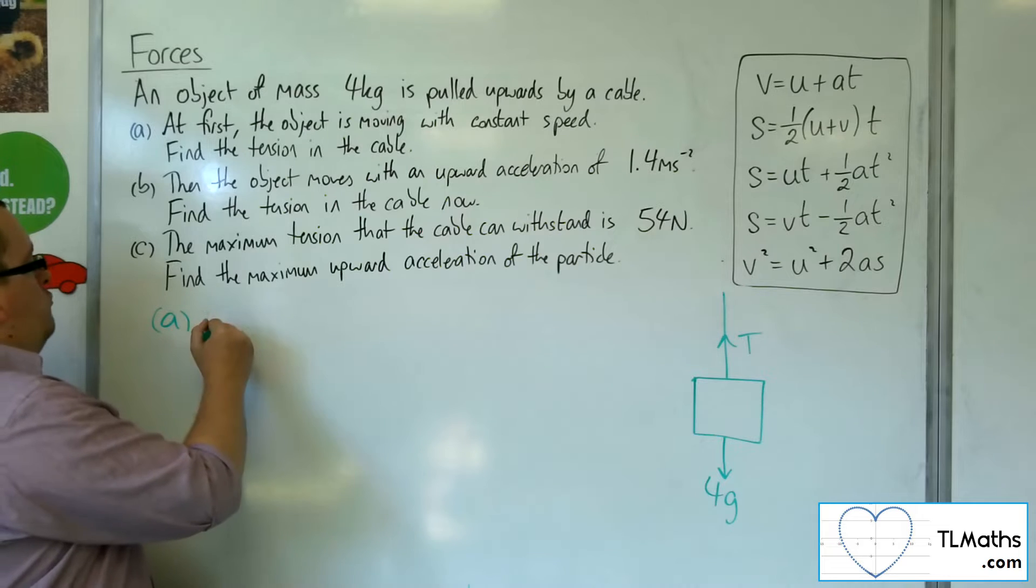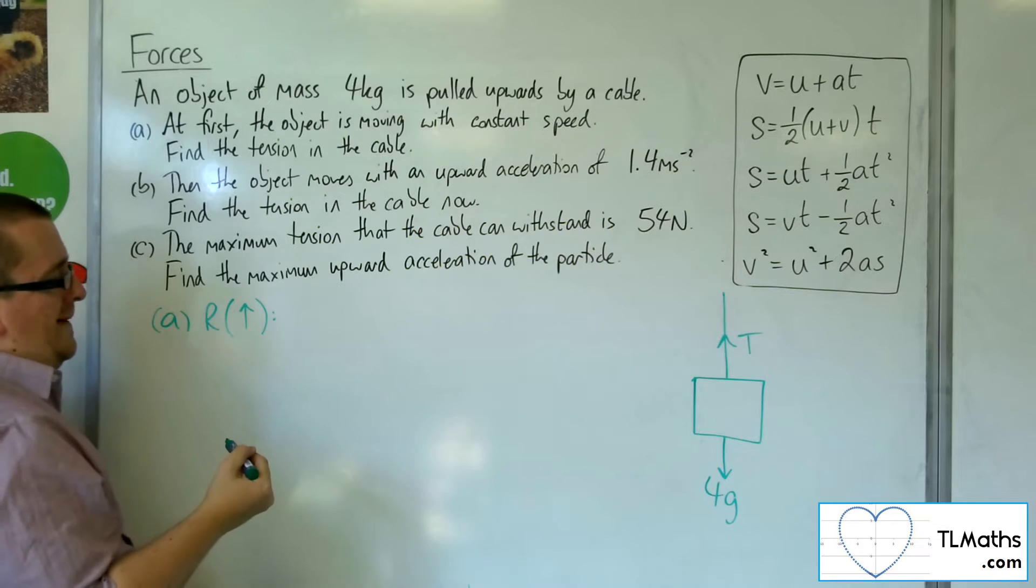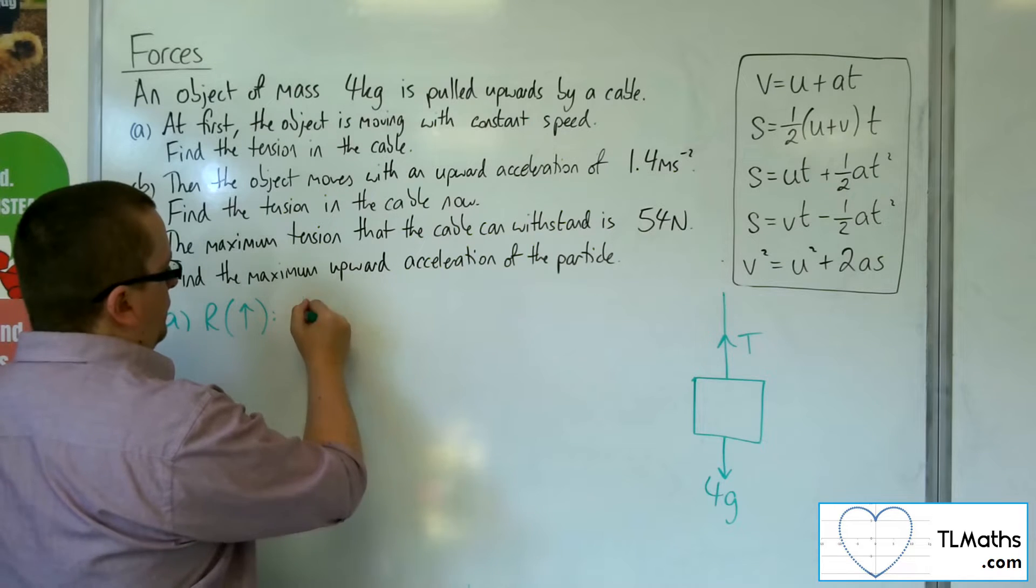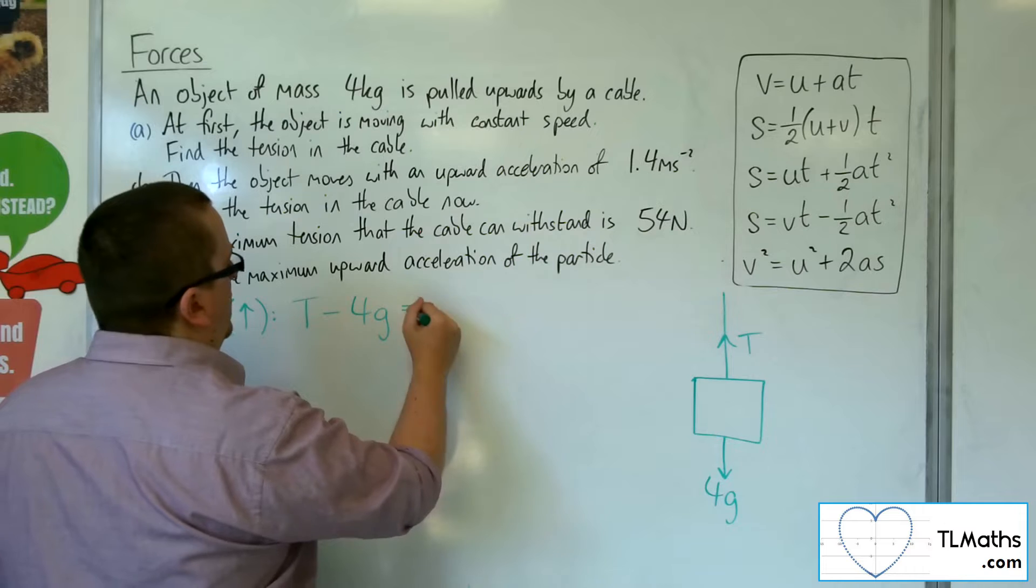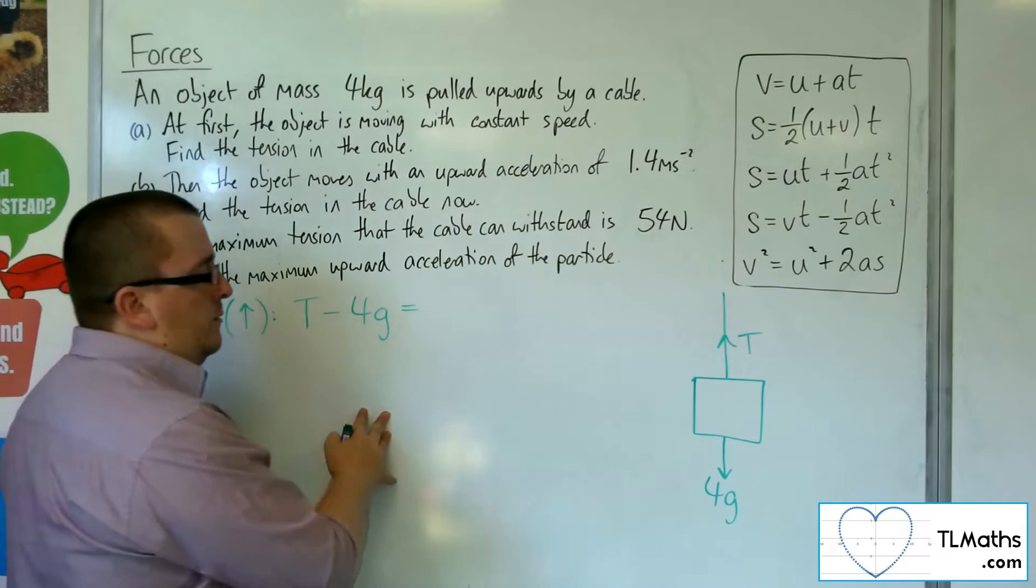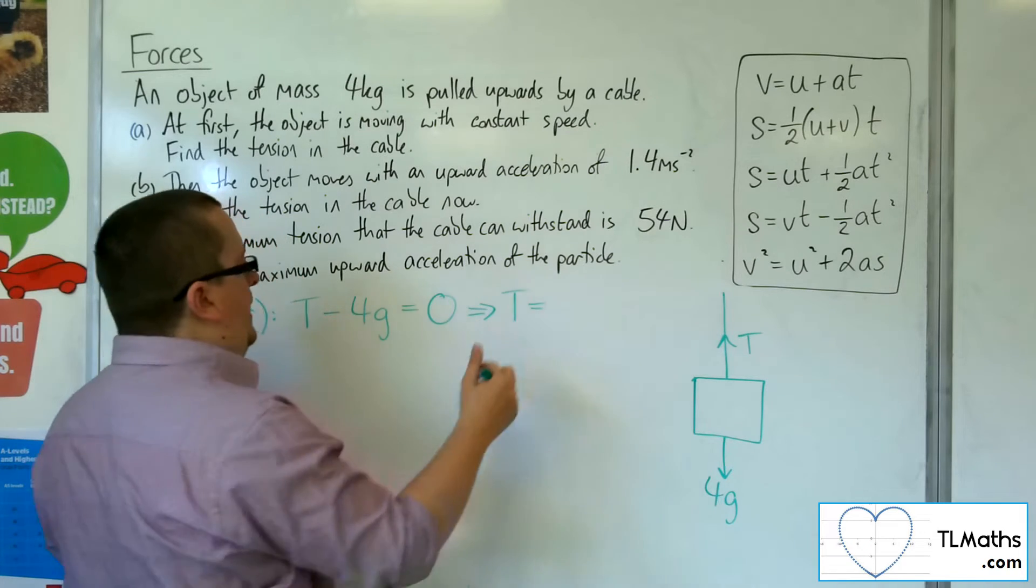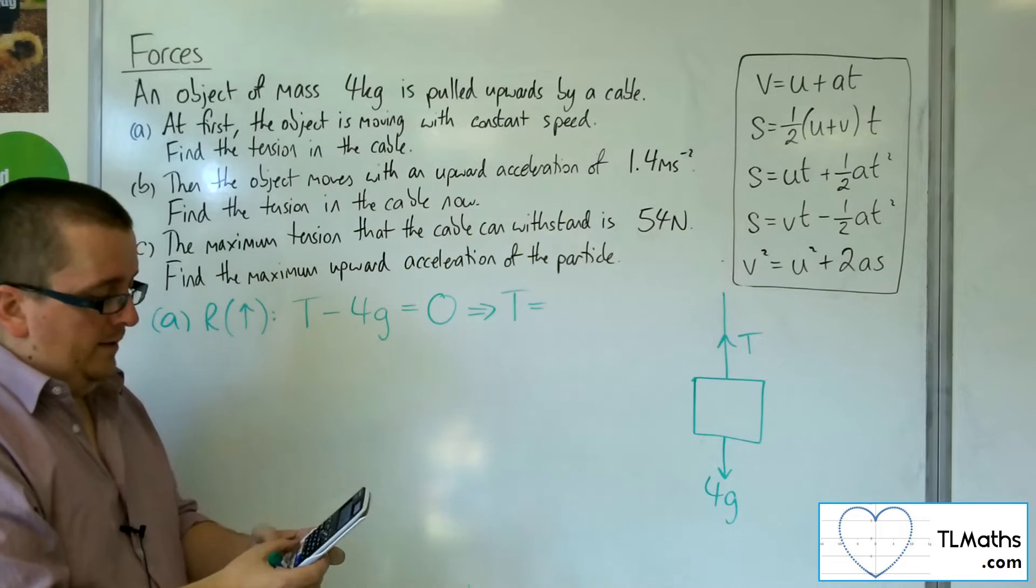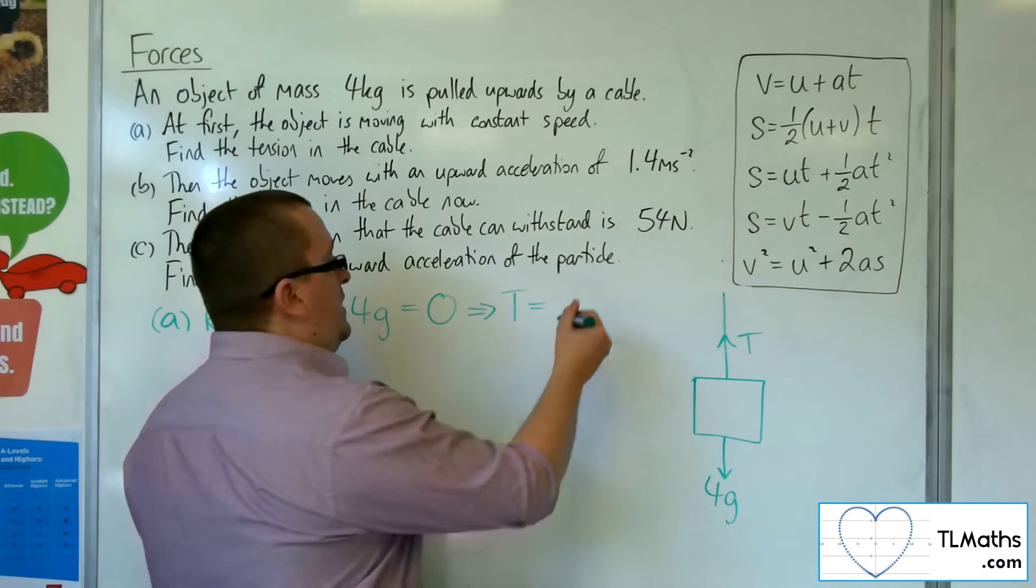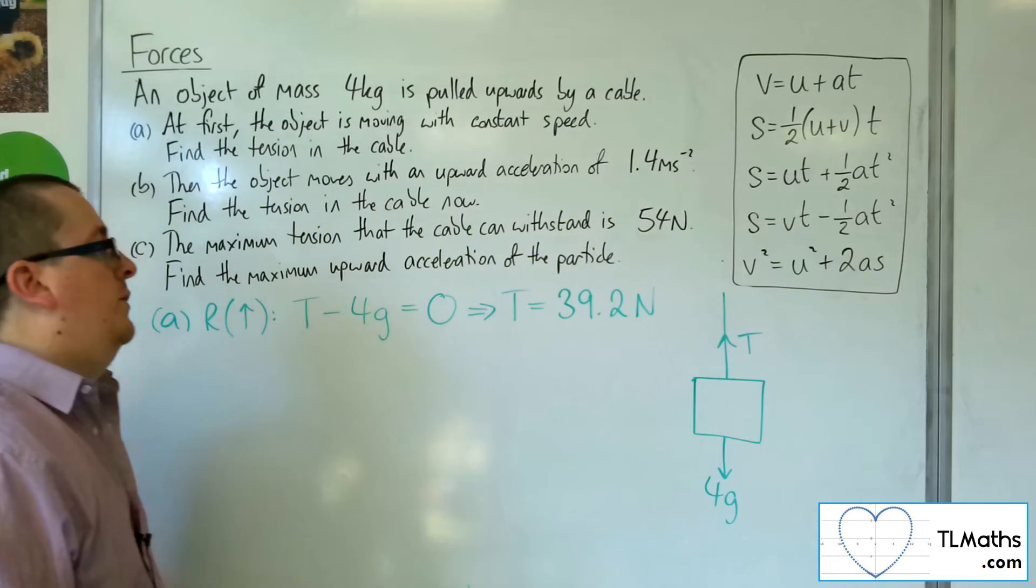So if I resolve taking upwards as positive, I've got the tension working upwards. I've got the weight working downwards. But that's going to be equal to mass times acceleration, which is 4 lots of 0, so just 0. So the tension is just 4 lots of g, which I'm going to use 9.8. And that gets me 39.2 newtons. So there's the tension.